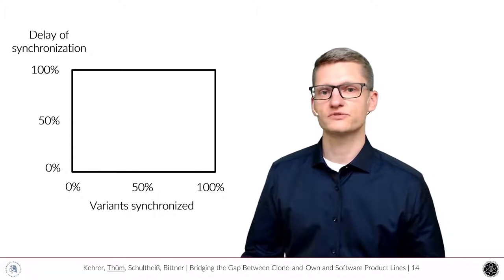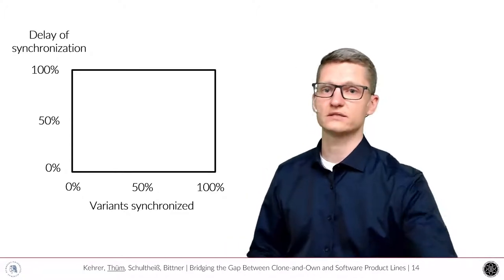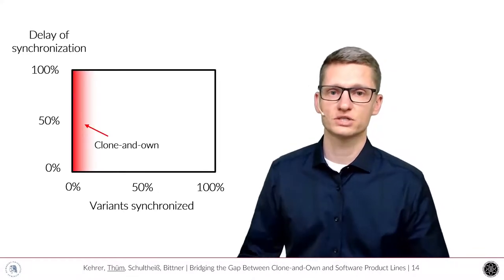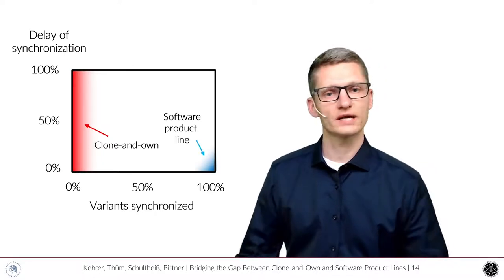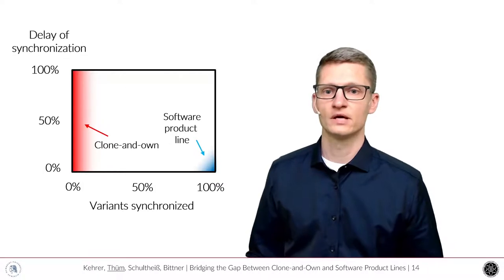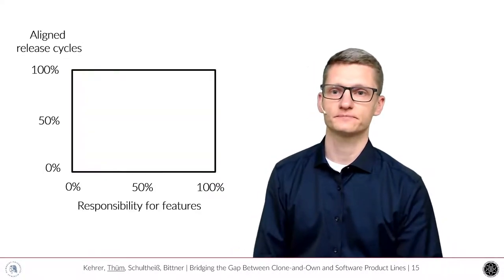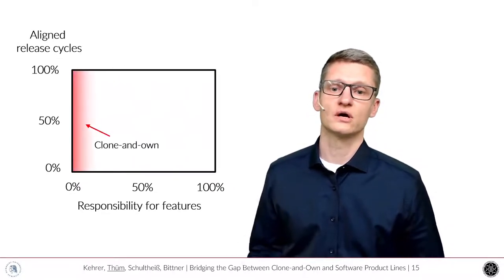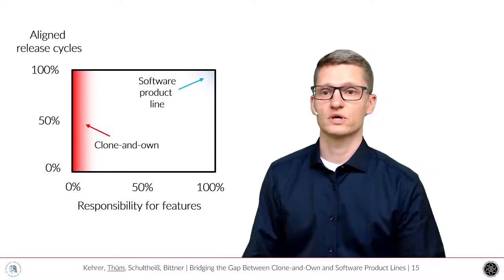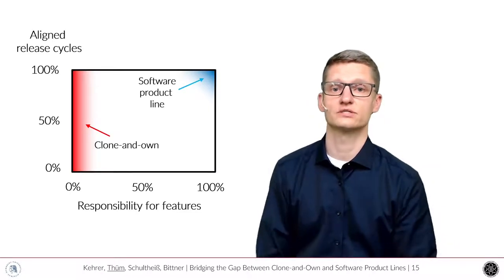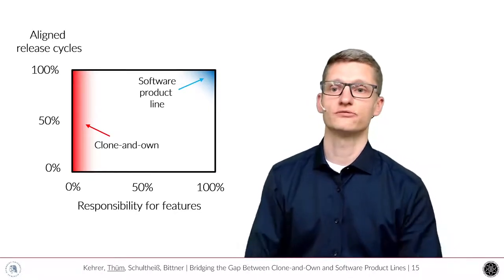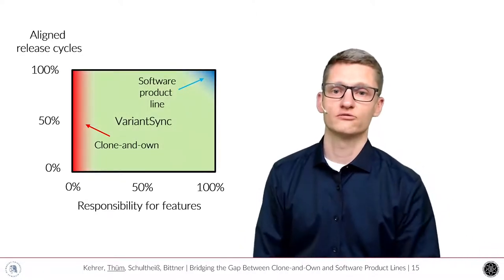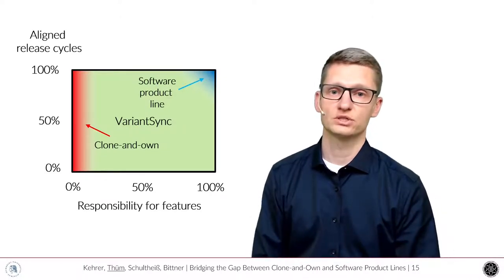There's another dimension of synchronization. How many of the variants are synchronized and how late does the synchronization happen? With clone-and-own, typically there's no synchronization going on because it's too much effort to do this manually. In the software product line, everything is synchronized right away. With VariantSync again, we aim to support everything in between. And finally, there's a responsibility either for variants in the clone-and-own case or for features. The same also happens for release cycles. They're aligned with each other in the software product line case and they might even differ in the case of clone-and-own. With VariantSync, we want to support an easy transition from one to the other where we not necessarily need to reach a software product line in the end.